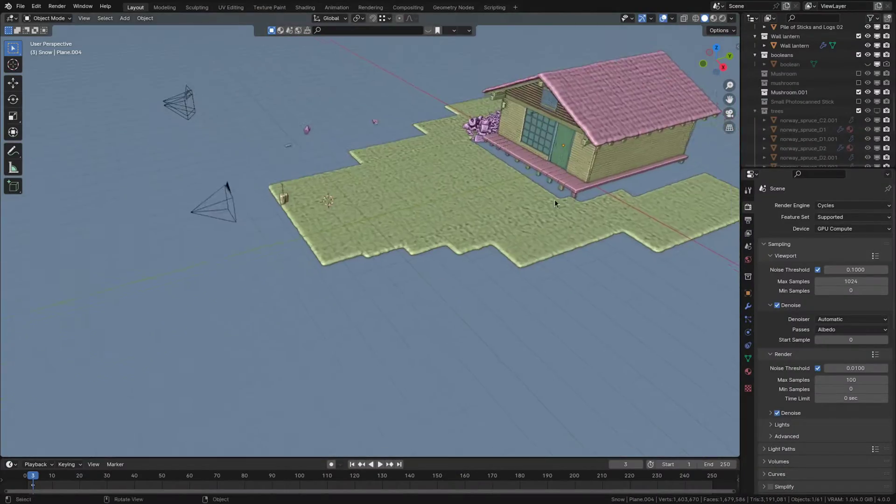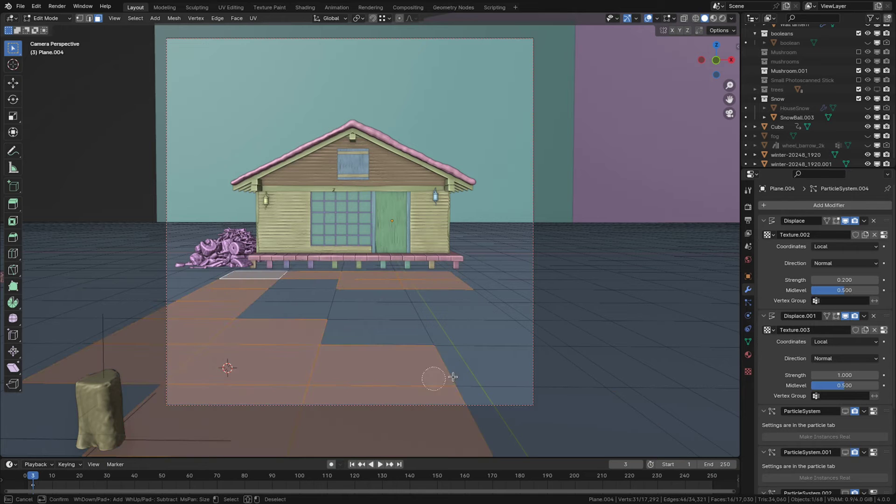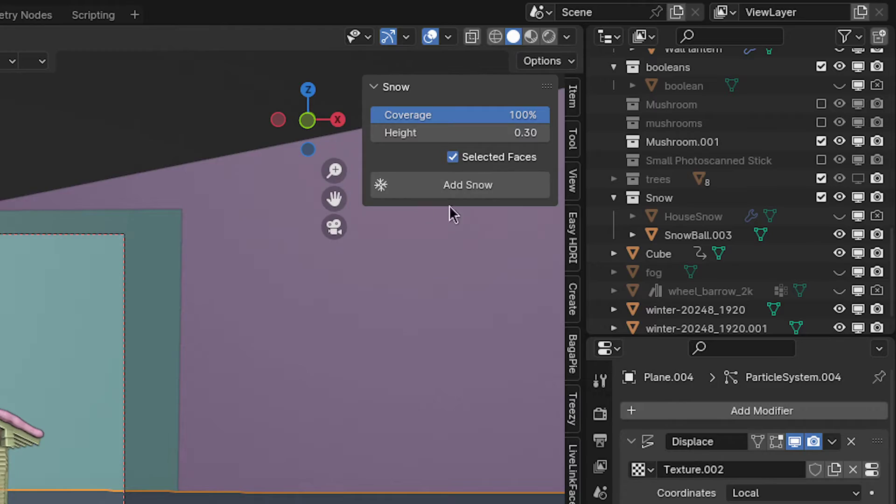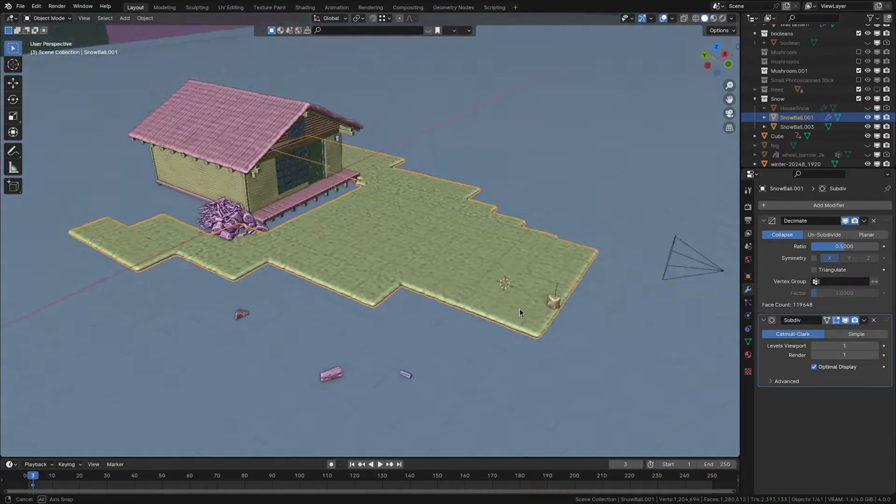So what you can do instead is only add the real snow close to the camera and use a different method for the distant parts of the scene. The way to do that is go to edit mode, select the parts of the ground you want the real snow on, go back to object mode and check selected faces in the add-on. Now if you press add snow, it will only add it where you've selected.